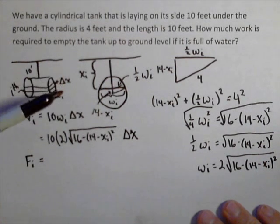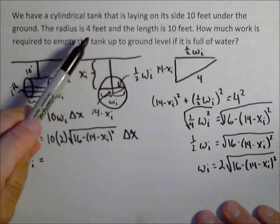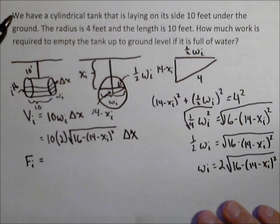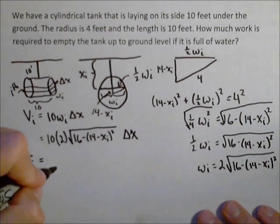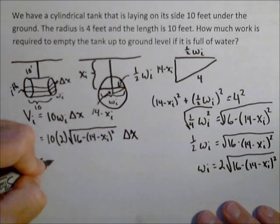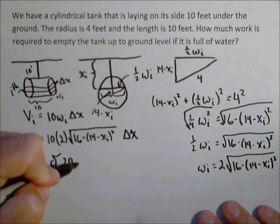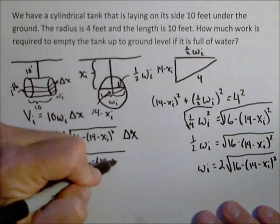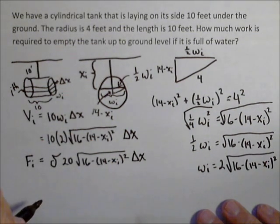Now what I want to look for next is what is the force on the i-th slice. So basically when I multiply this by the density, I will have a force, because we're talking about water. But if we notice the units that we're in, we're in feet, and water has a density of 62.4 pounds per foot cubed. So what I'm going to do is multiply this by my delta, I'm just going to call it delta for now so we could sub that in later, times 20 times square root of 16 minus (14 minus x sub i) the quantity squared, delta x.